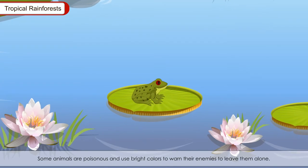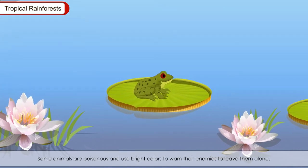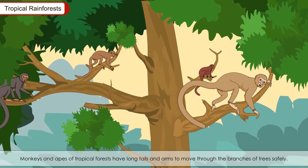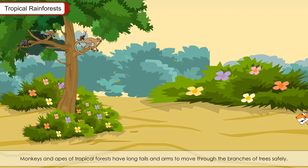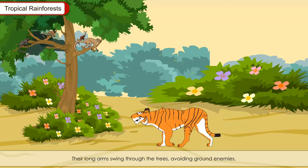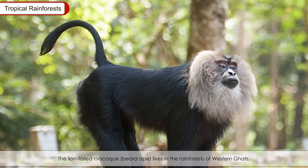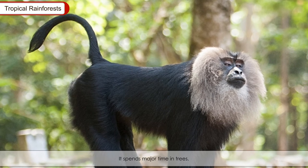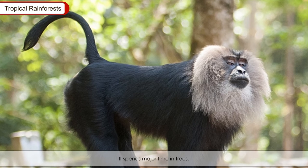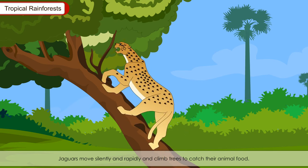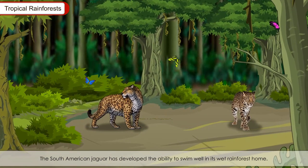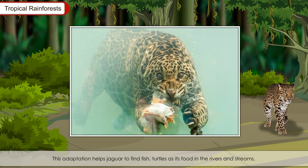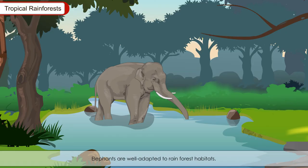There are some butterflies whose wings look like leaves. Some animals are poisonous and use bright colours to warn their enemies to leave them alone — for example, brightly coloured poison arrow frogs. Monkeys and apes of tropical forests have long tails and arms to move through the branches of trees safely, and their long arms swing through the trees avoiding ground enemies. The lion-tailed macaque lives in the rainforests of the Western Ghats. Its most unique feature is the silver-white mane surrounding the head from cheeks down to its chin. It spends major time in trees. Jaguars move silently and rapidly and climb trees to catch animal food. The South American jaguar has developed the ability to swim well in its wet rainforest home, which helps it find fish and turtles in rivers and streams.